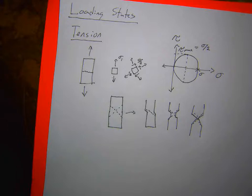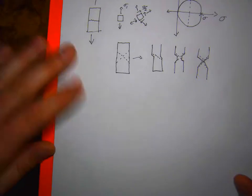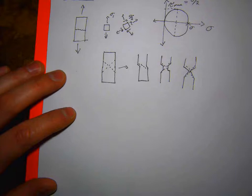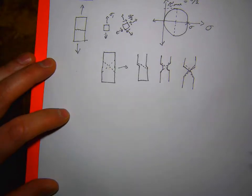The reason we see necking in ductile materials is because we have that shear happening. Not only is it that we're surpassing a yield surface that starts failure, it's actually the shear component of that, and we have to know in what direction that shear component is acting. That's the simplest case for tension.